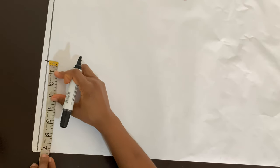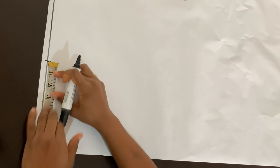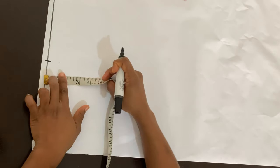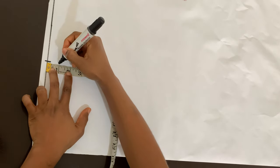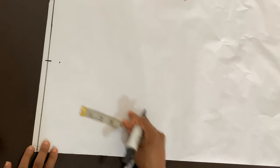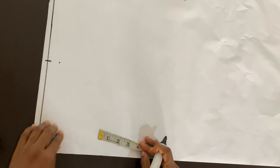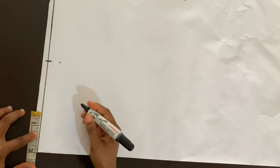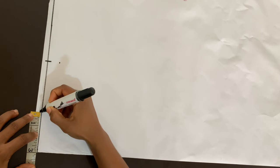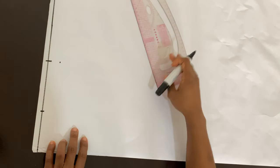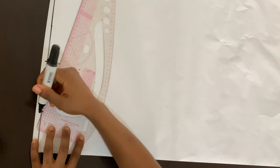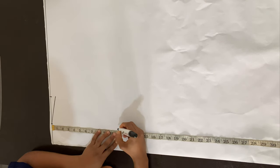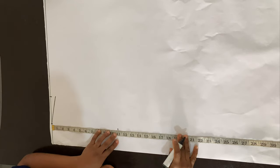We're going to start off by drafting the back piece. The first thing I did was divide the shoulder measurement by two and mark that on the baseline. Then I went down from that shoulder point by one inch to create my shoulder slope. For the neck width I'm using three inches, and I'm going to connect that neck width to that one inch mark to create my shoulder slope.